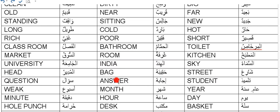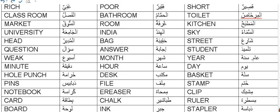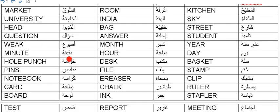Ijabah means answer. Soal, question. Aam or Sanah, year. Sheher, month. Azbu, week. Day. Sa, hour. Daqiqa, minute. And Daqaiq - this is the plural of Daqiqa - means minutes. Sa means seconds.